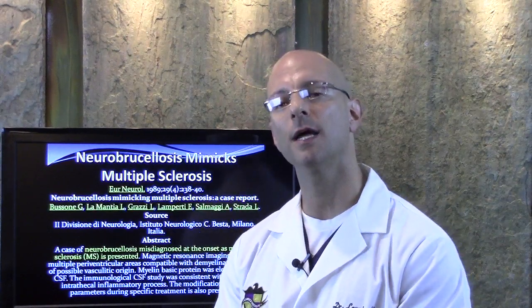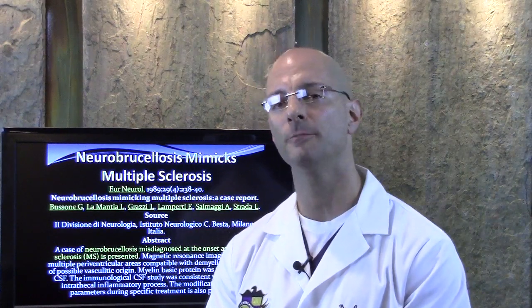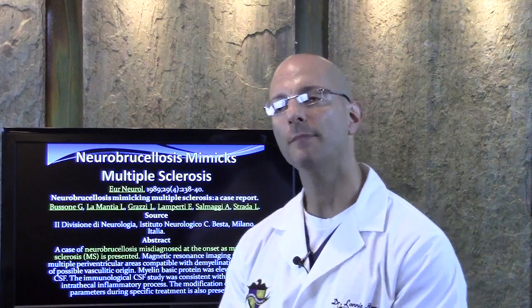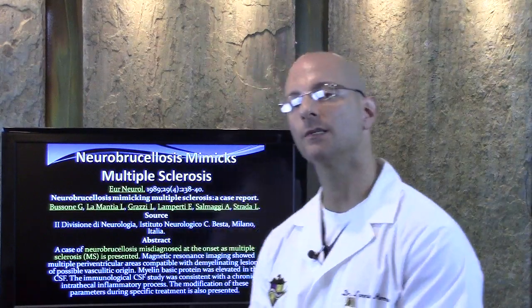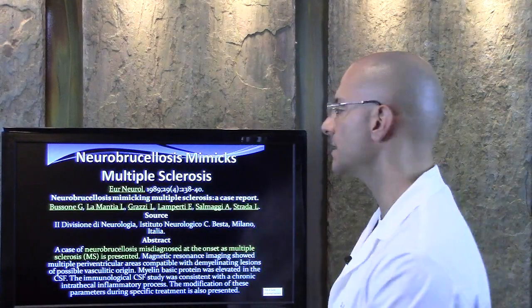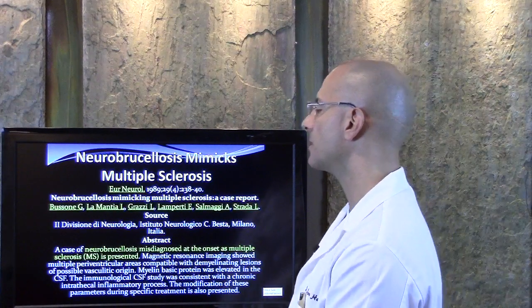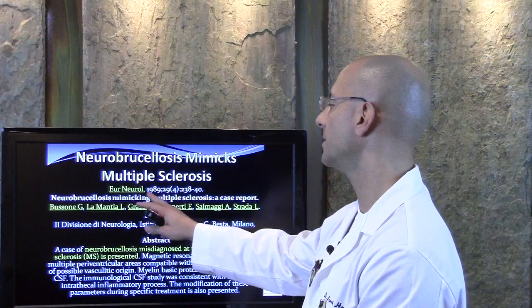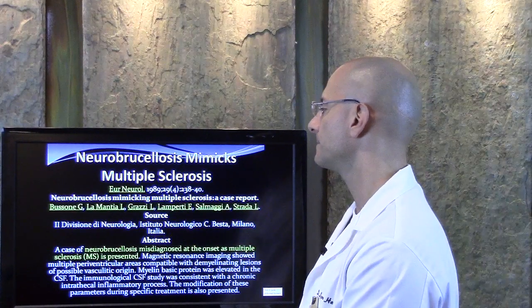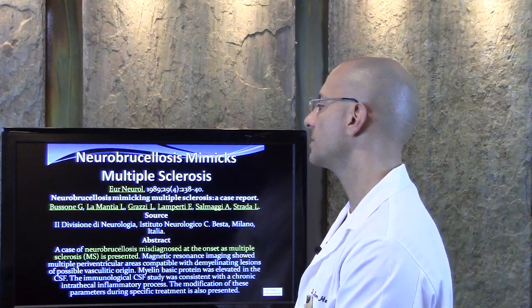There is a kind of bacteria that I covered in a previous video about mycoplasma. Well, that mycoplasma comes from a bacteria called Brucella. There have been studies on patients with multiple sclerosis with lesions in their brain or spinal cord, and what they found — this came out of a 1989 European Neurology Journal — is neurobrucellosis.